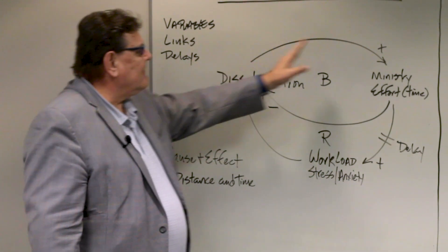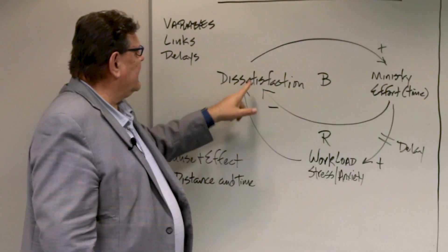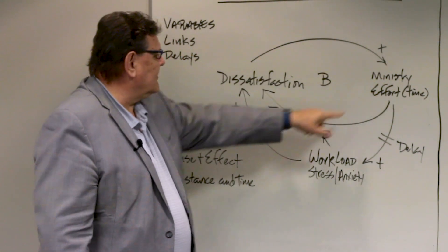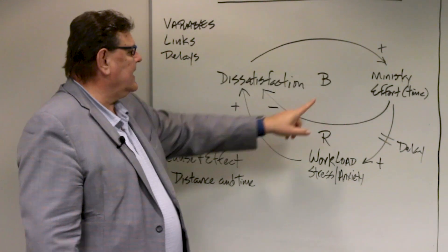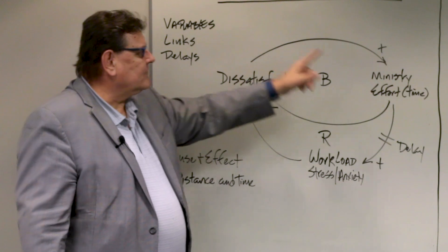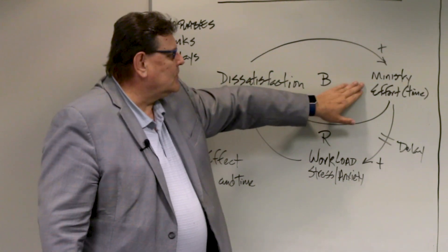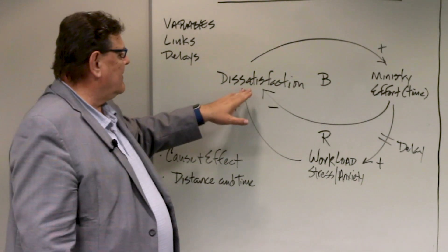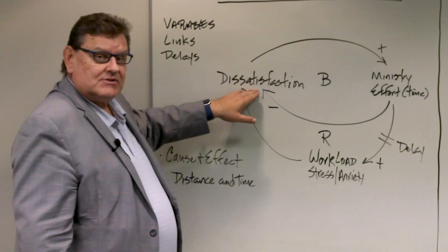When you have one link—this is called the link, the variable and the link between the variables—when you have one positive and one negative, that creates a balancing loop. In other words, it's not going to go on forever because as Moses increases his ministry time, that dissatisfaction is going down.